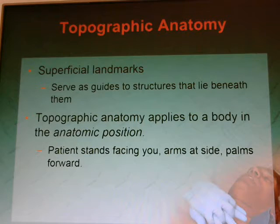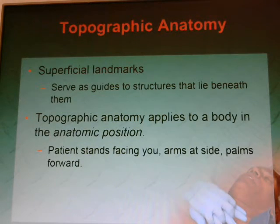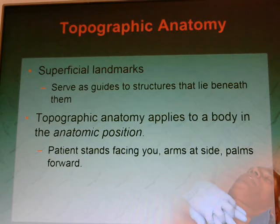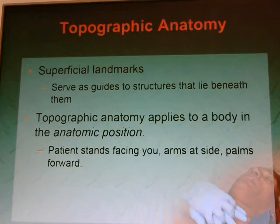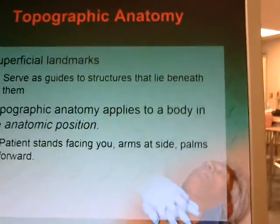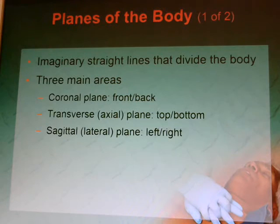Topographical anatomy involves superficial landmarks — surface guides that tell us what lies beneath them. For example, your sternum has that pointy thing at the bottom called the xyphoid process. Topographical anatomy also applies to the body in anatomical position, which is your patient standing facing you with arms down at their sides and palms out. There are three imaginary lines we use to talk about dividing the body, called the planes of the body.